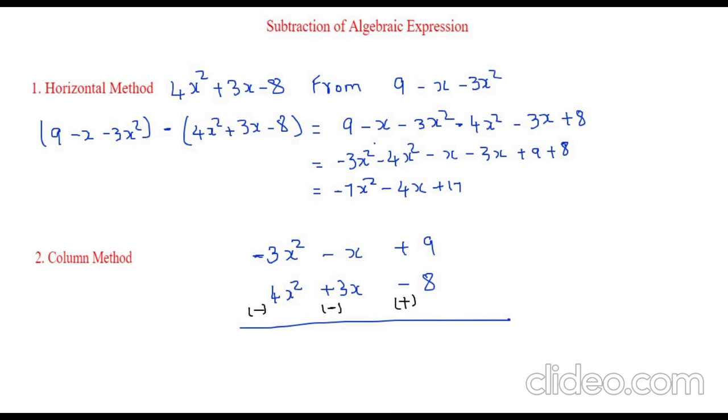So now let's add and subtract the equations. So it is minus 3 and minus 4, we get minus 7x square. Minus 1 and minus 3, we get minus 3x. And plus 9 and plus 8, we would get plus 17.